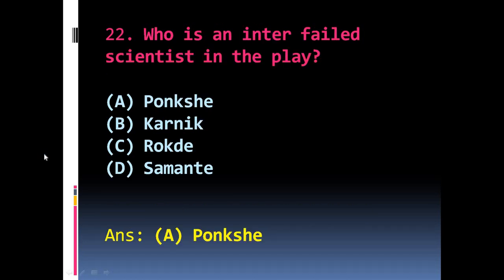Question 22: Who is the failed scientist in the play? The options are A) Ponkshe, B) Koenig, C) Rokade, D) Shaman. The right answer is A) Ponkshe.